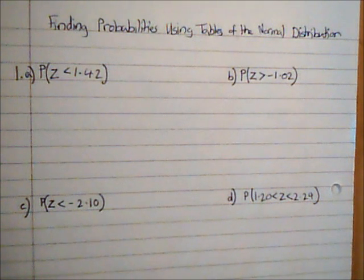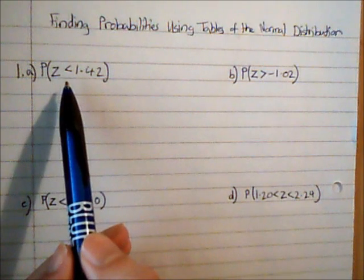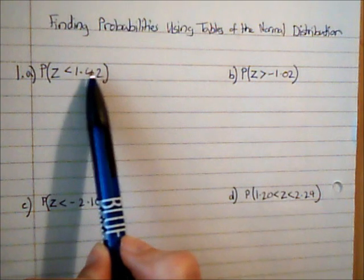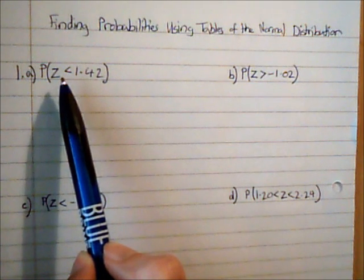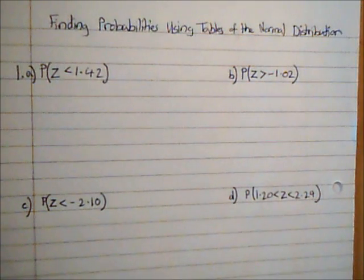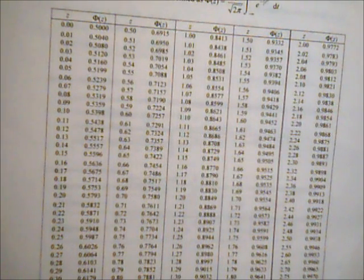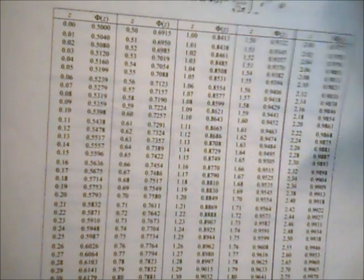In this first question we're asked to find the probability that Z is less than 1.42. This is what we would call the standard normal distribution, and this value represents how many standard deviations away from the mean the value is — so what's the probability of a value being less than 1.42 standard deviations above the mean. Looking at the table, 1.42 gives an associated probability of 0.9222.